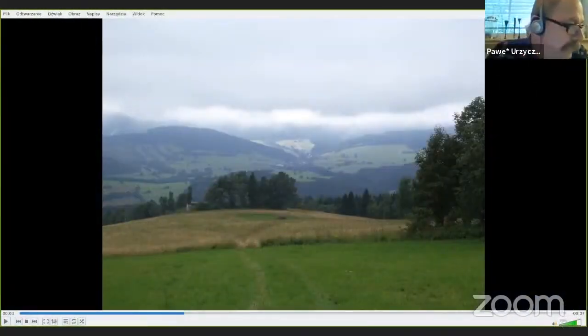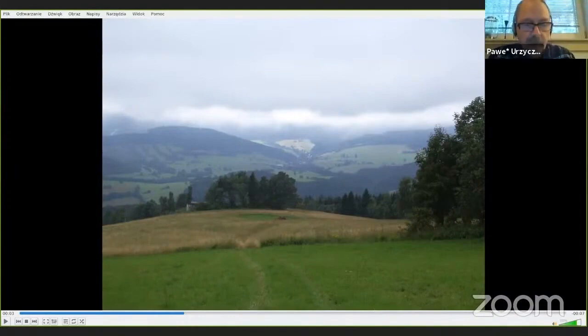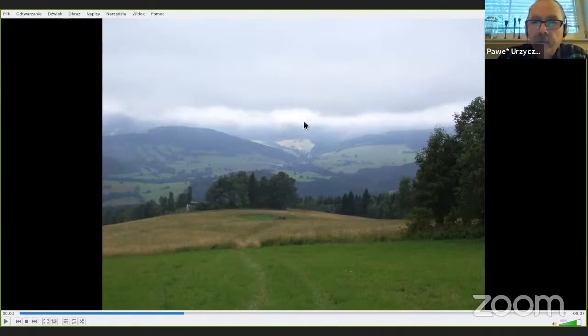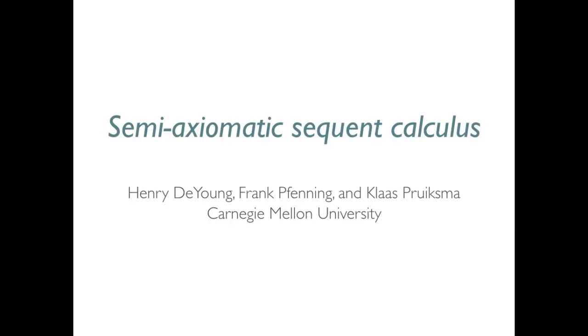The first talk is on semi-axiomatic sequent calculus, and there are three authors: Henry de Jong, Frank Pfenning, and Klaus Pruiksma. We have two pre-recorded movies you should see. Hi, I'm Henry de Jong and Klaus Pruiksma, and I will be presenting our paper with Frank Pfenning on a semi-axiomatic sequent calculus.